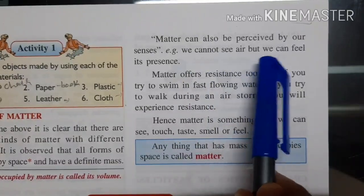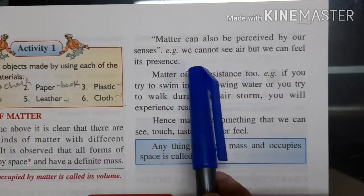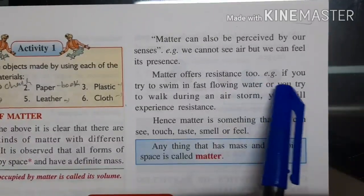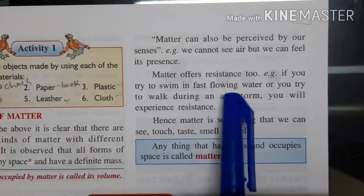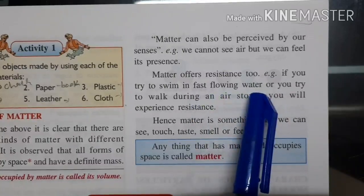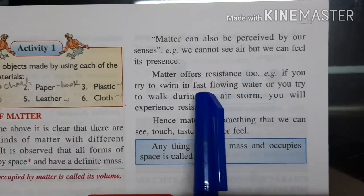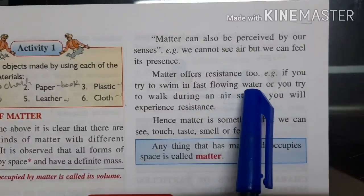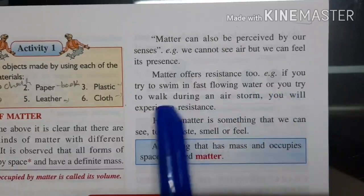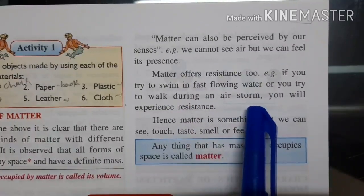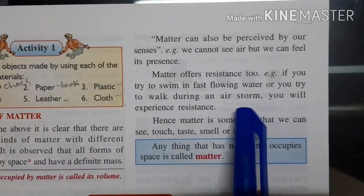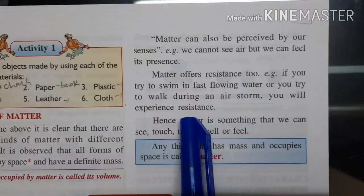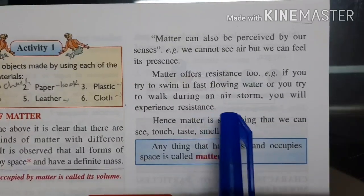We cannot see air, but we can feel it by breathing. Now, matter offers resistance. For example, if you try to swim in fast-flowing water like a river running very fast, and you swim in the opposite direction, you need to try very hard because the water resists you. Similarly, if a strong air storm is coming toward you and you try to walk in the opposite direction, that air storm resists you.